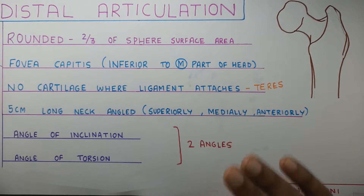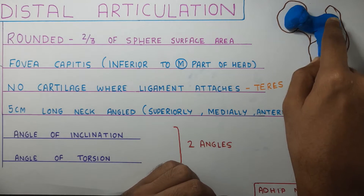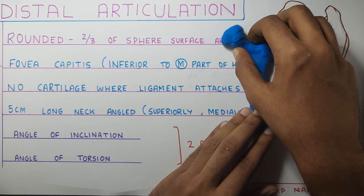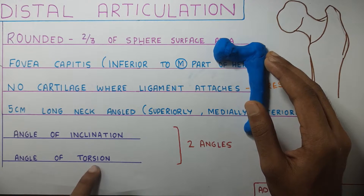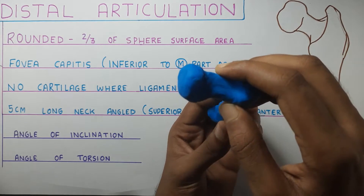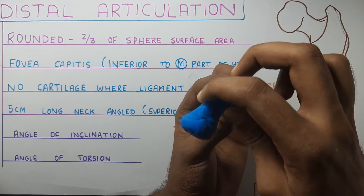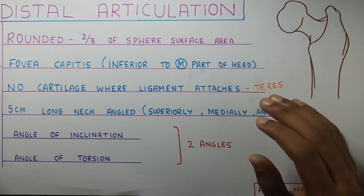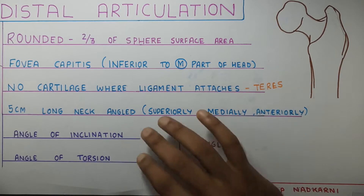In simple words, the angle of inclination is basically how much your neck is inclined upward. The angle of torsion is, if you look at the femur from the top, how much the neck is twisted forward or backward. That is your angle of torsion. We'll also have to look at the ranges they cover and some other points under these angles.